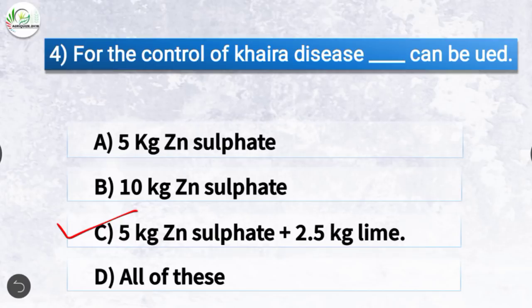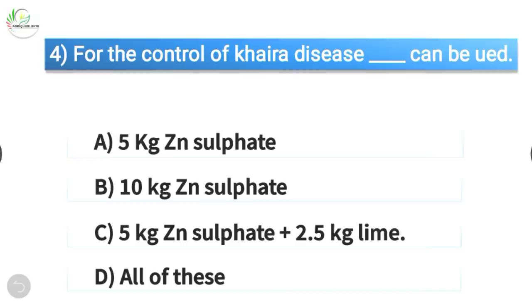For the control of Khera disease, 5 kg zinc sulfate plus 2.5 kg lime can be used.